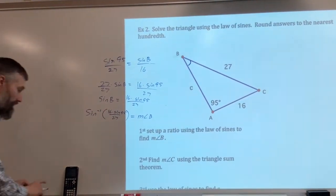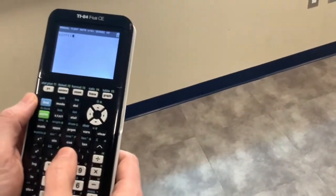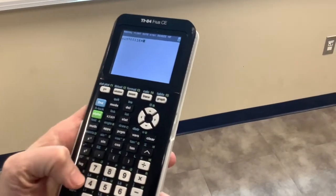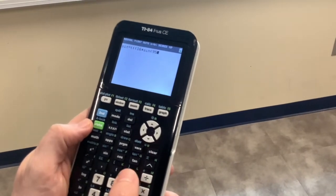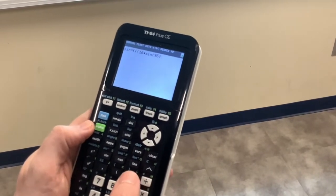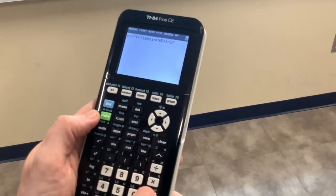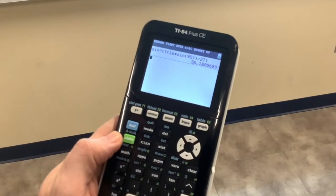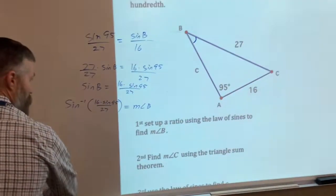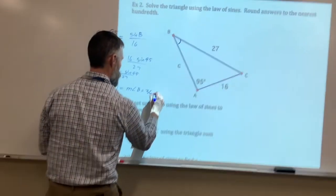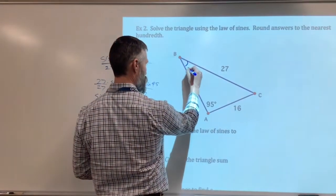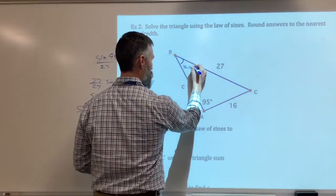So we're going to use our calculator and punch this in. So I'm going to bring it over here. We're going to go inverse sine. I'm going to open up a couple parentheses. I'm going to go 16 times the sine of 95, close, divide by 27, and then close. And that should get me the correct angle. 36.18. So I'll take that. Angle B equals 36.18. Now I'm a very visual learner. I like to put it on the model. 36.18 degrees.